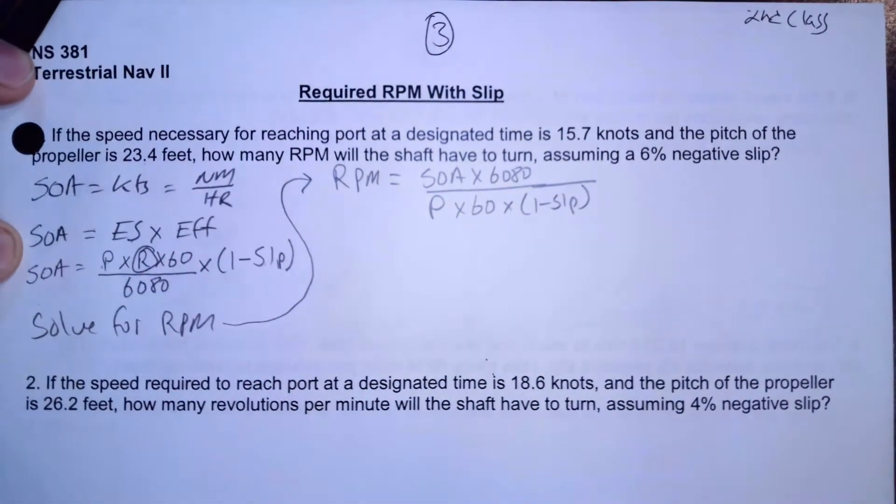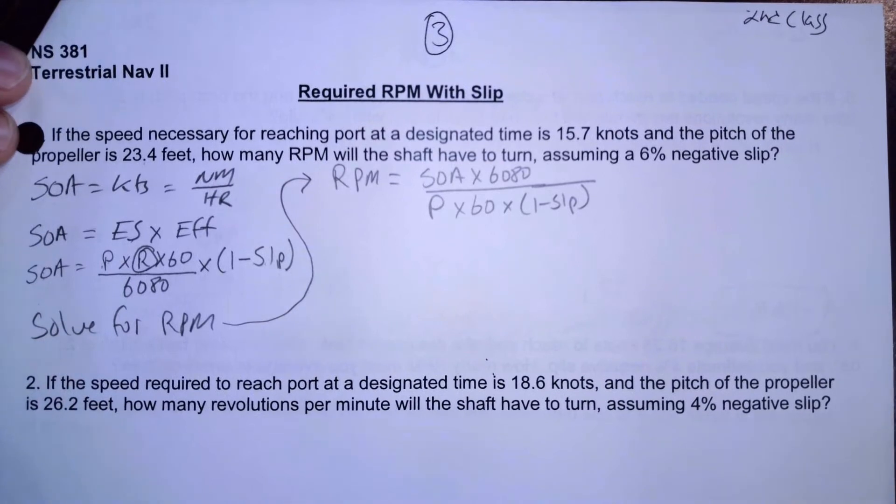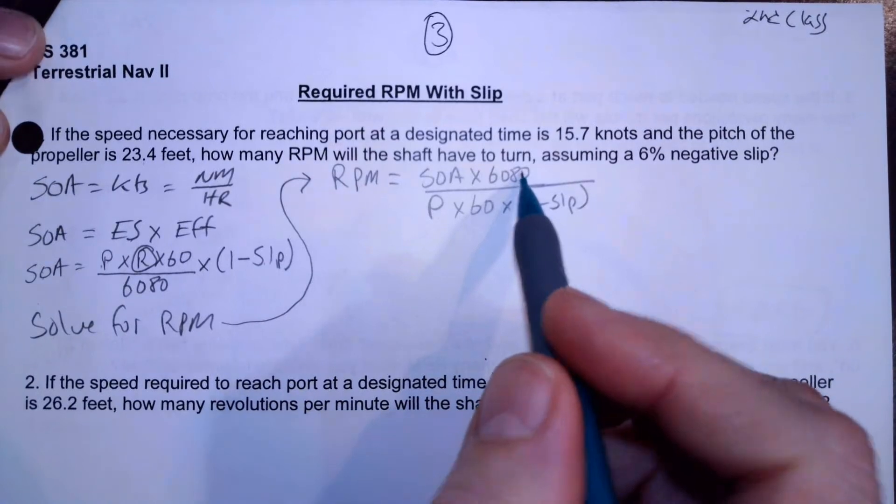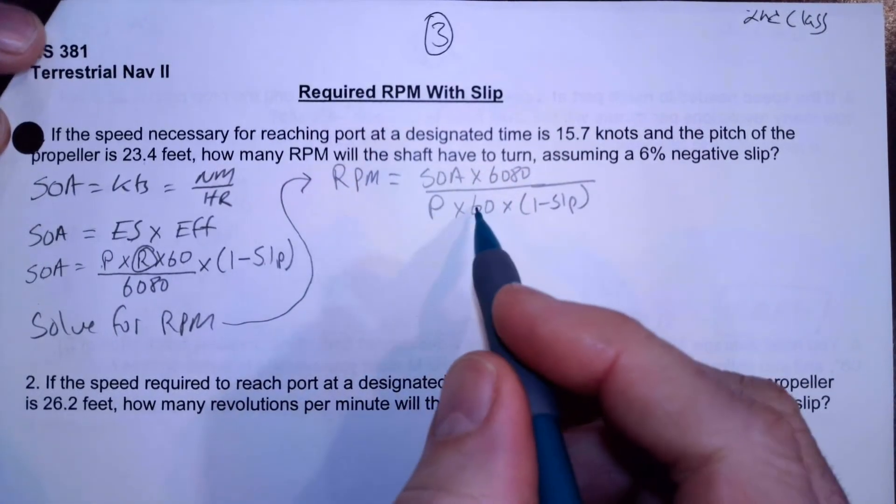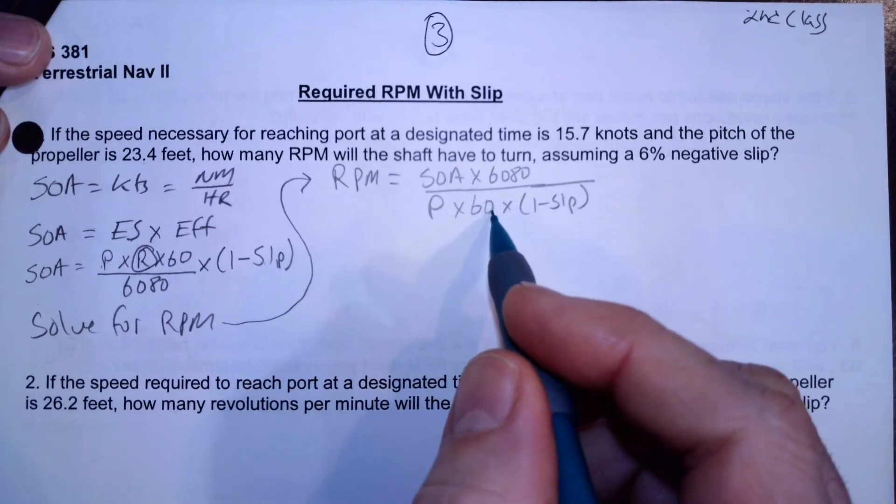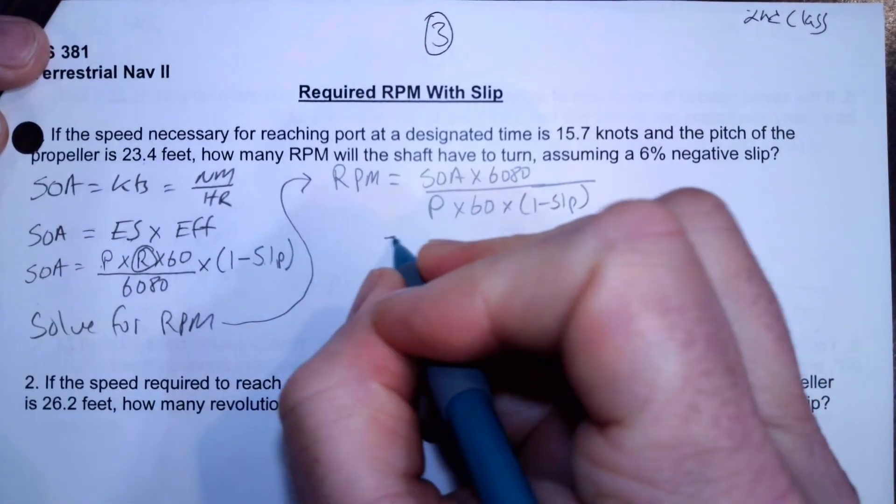And I have to divide both sides by my efficiency. So this is the new formula, it's the same formula, I just rearranged it. So RPM is going to be speed of advance times the 6080 conversion factor divided by pitch times 60, which is another conversion factor, times one minus slip. So now it's just substitution.